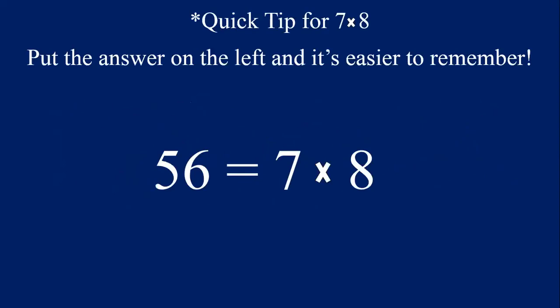Well done. Now one quick tip for seven times eight, or eight times seven — sometimes that's a hard one to remember. But if you switch the order, put the answer on the left side and the equation on the right side, you can see a really easy pattern: the numbers count in order — five, six, seven, eight. So if you forget what's seven times eight, just remember five, six, seven, eight, and you can recall that seven times eight equals 56.